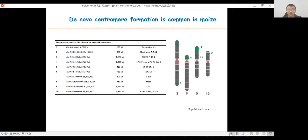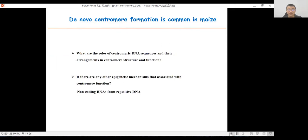Centromere sizes range from several kilobases to several hundred kilobases to several megabases. However, no conserved or specific DNA motifs were associated with the CENH3 seeding from these sites. We want to know what are the roles of centromeric DNA sequence and the rearrangement in centromere structure and function. Are there any other epigenetic mechanisms that are associated with centromere function, such as non-coding RNAs from repetitive DNAs?